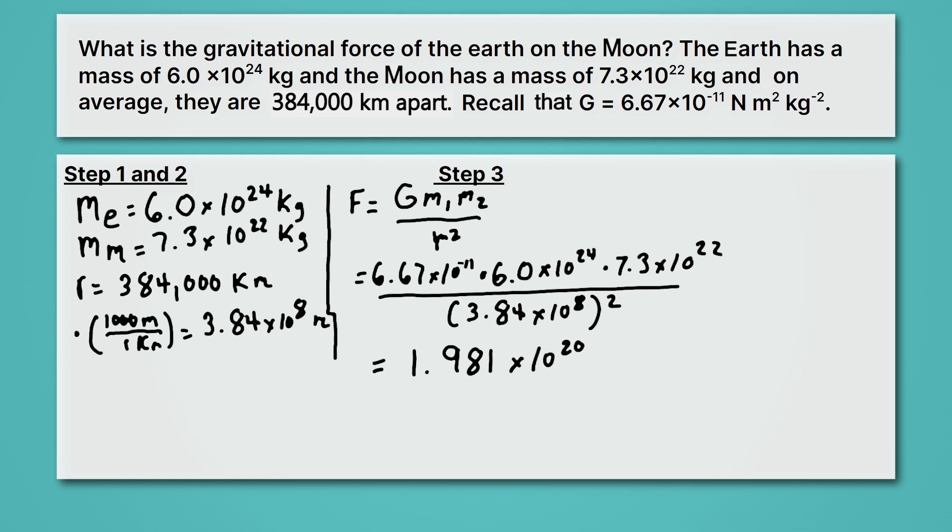Now, we need to round for sig figs. Our masses have two sig figs each. One, two, and one, two. So that's how many sig figs we need to round to. We'll keep the first two digits here, which is the 1 and the 9. And we'll get 2.0, because we round up, since that next number there is an 8, times 10 to the 20. And then that's Newton. So that's the gravitational force between the Moon and the Earth, which is quite a large force.